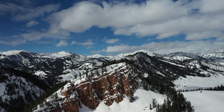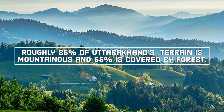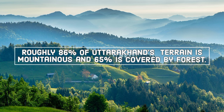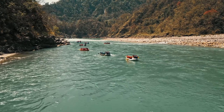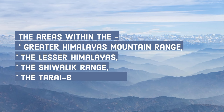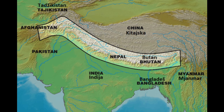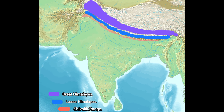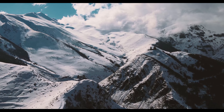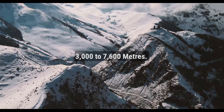Uttarakhand's geography is characterized by the Himalayas mountain range and the plains in its southern part. Roughly 86% of Uttarakhand's terrain is mountainous and 65% is covered by forest. Physiographically, the state can be divided into four areas: the area within the Greater Himalayas mountain range, the Lesser Himalayas, the Shivalik range, and the Terai-Bhabar region. Most of the northern part of the state is part of the Greater Himalaya mountain range, also known as Kumaon Himalayas. The entire area is covered by high mountain peaks and glaciers, with elevations ranging roughly from 3,000 to 7,600 meters.